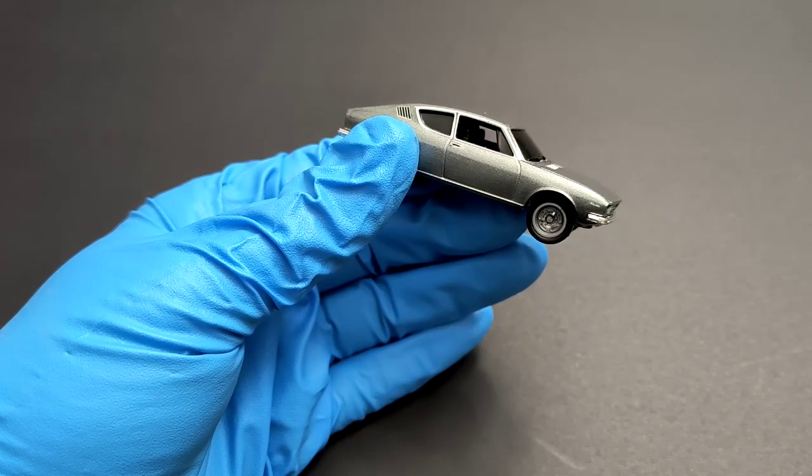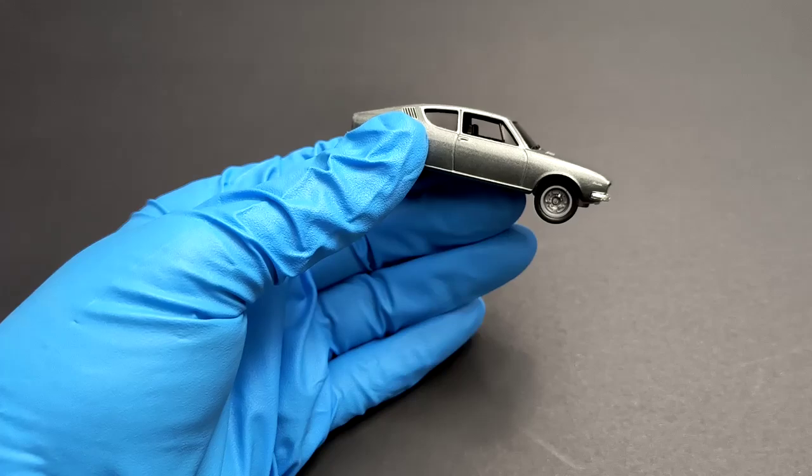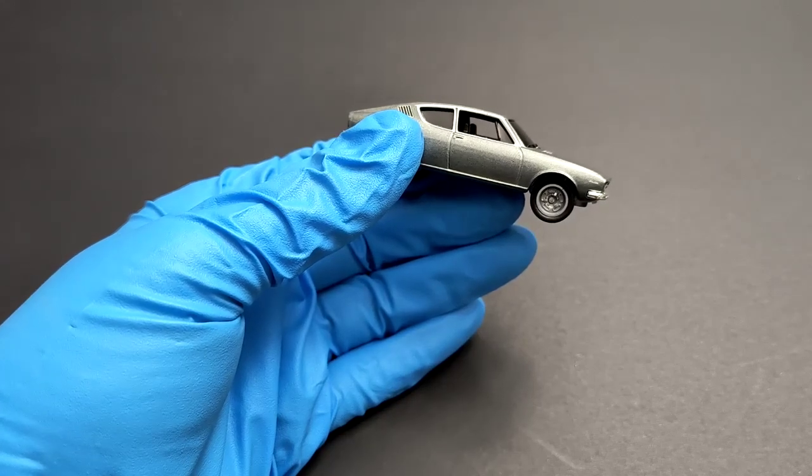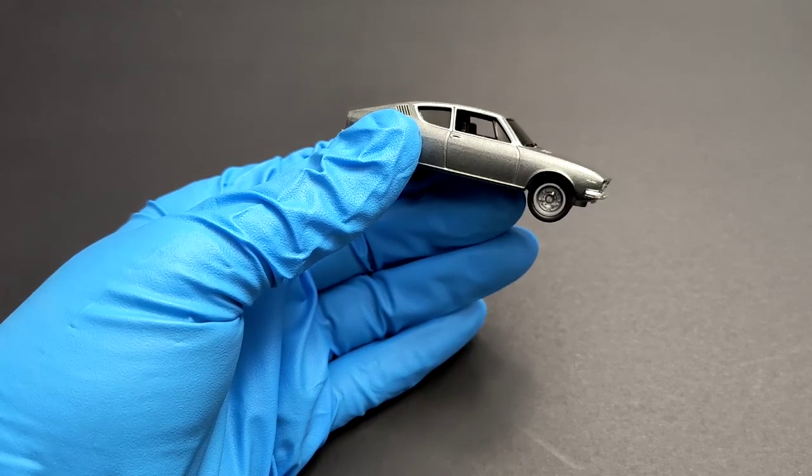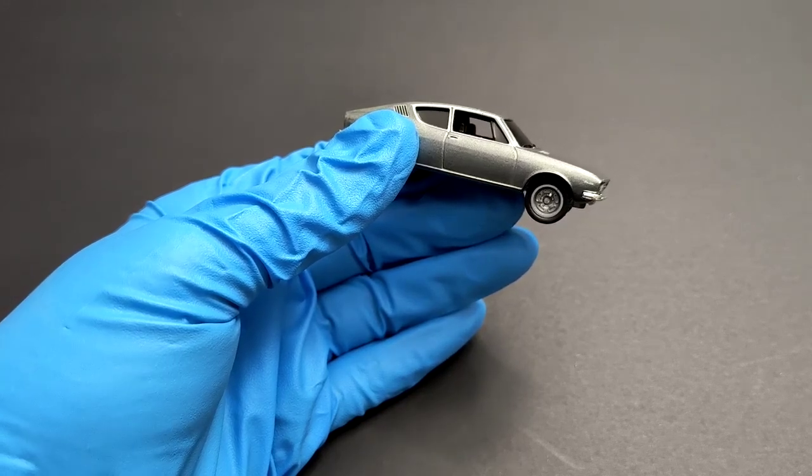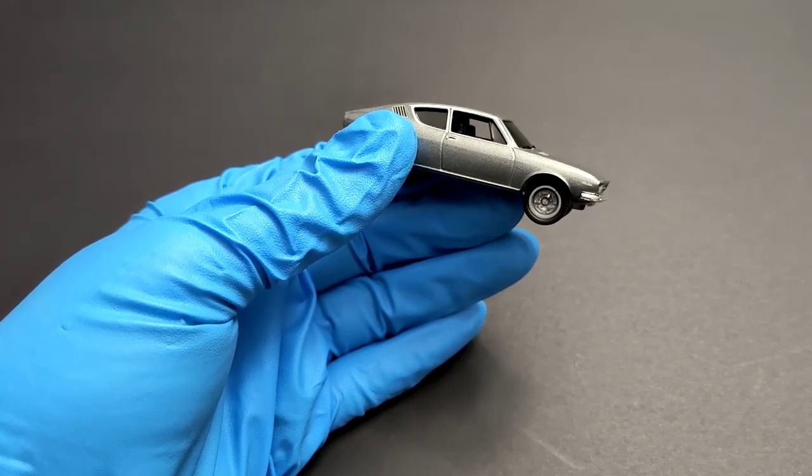Hello everyone, welcome to Small Model Car. Today we have a 1969 Audi 100 Coupe S. This is way before the modern Audi we see under Volkswagen.